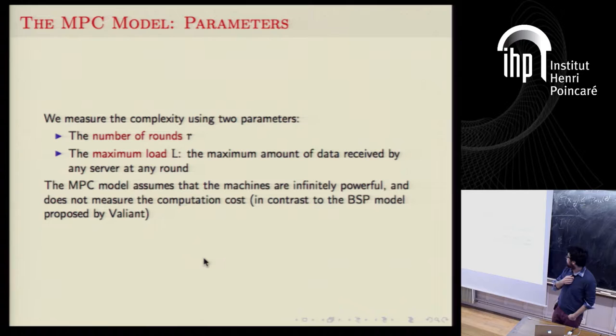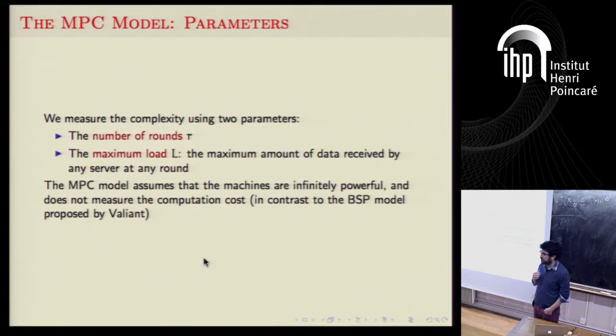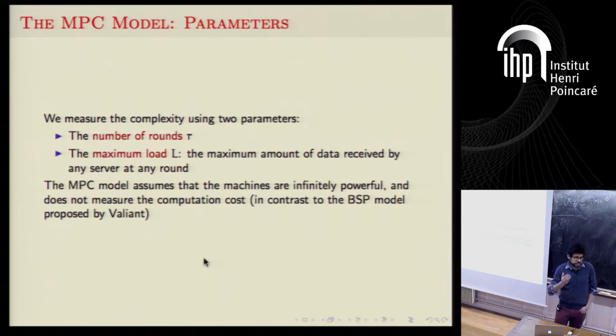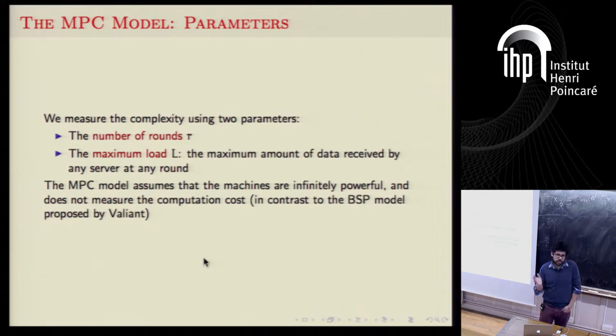For those familiar with Valiant's bulk synchronous processing model, this is very close to that — we just don't care at all about computation cost. We assume machines are infinitely powerful; they can do whatever computation they want on the data. We just want to bound how much data they actually receive. For query processing this is a nice assumption, because the joins we do are actually pretty fast — some low polynomial, nothing exponential.